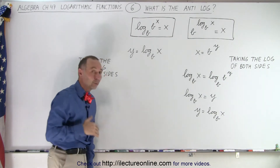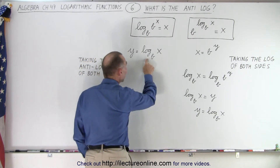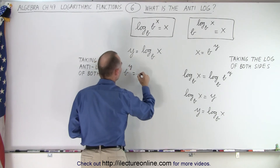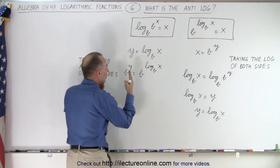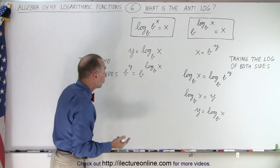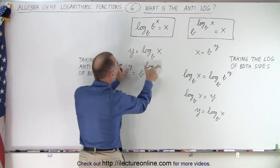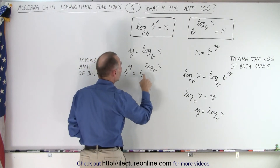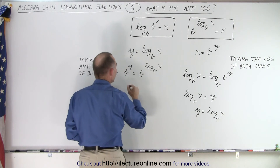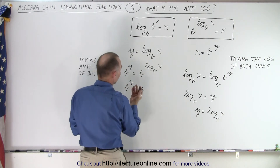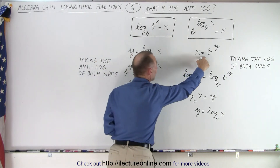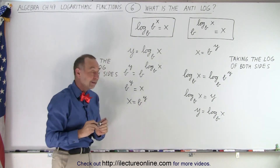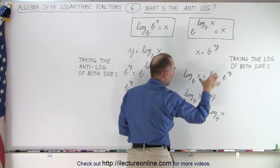We're going to take the anti-log of both sides. What does that mean? We take the left side and the right side and make them the exponent of the base b. So on the left side we get b to the y power, and that should equal b raised to the log base b of x. That's taking the anti-log of both sides. Since y equals log base b of x, making them both exponents of the same base b keeps them equal. But notice, when we take b raised to the log base b of x, we simply get x on the right side. So b to the y power equals x, or x equals b to the y — which is the exponential form.